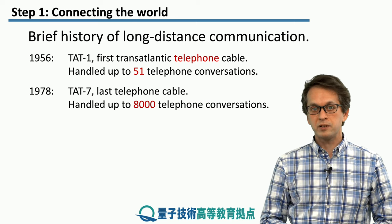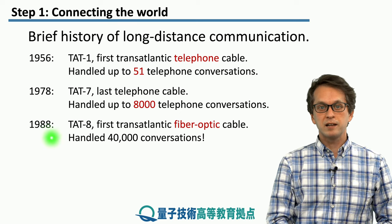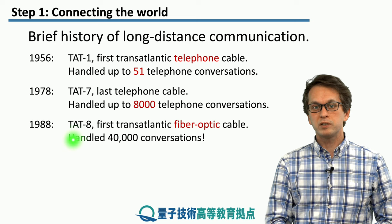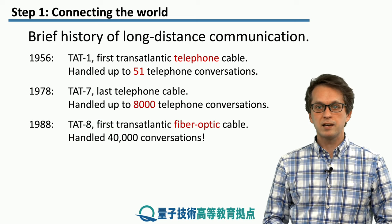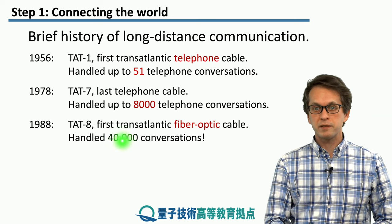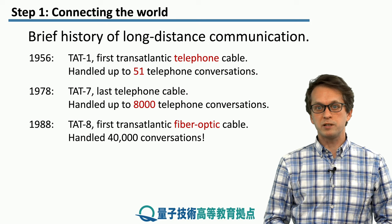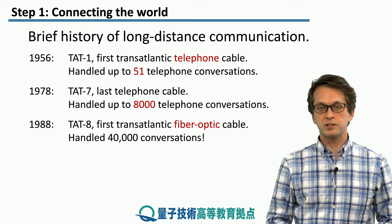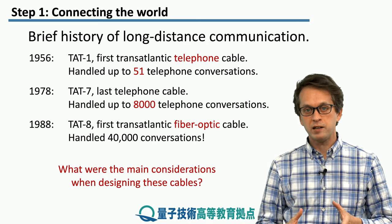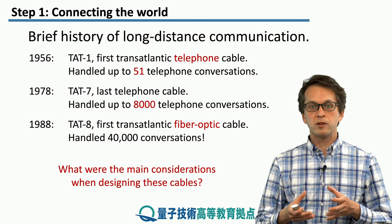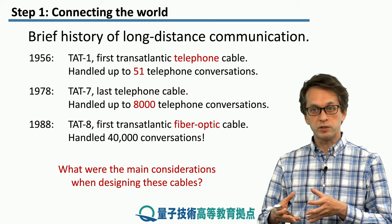After telephone cables came the fiber optic cables. As we saw in the previous lesson, in 1988 the first fiber optic cable, TAT-8, was laid and increased the bandwidth to the equivalent of 40,000 telephone conversations. In this lesson, what we are going to mainly focus on is what were the main considerations when designing these cables — particularly bandwidth and noise.